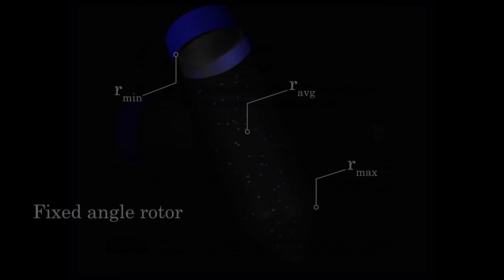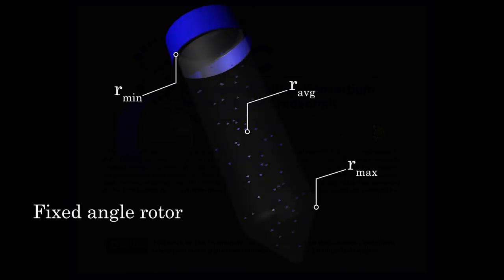But there is a limitation on the speed at which we can spin a swinging bucket rotor without generating too much turbulence and friction. So commonly when higher speeds are required, we will use a fixed angle rotor. These can be spun at a much higher G-force because they are machined to a high tolerance of balance and they are solid, low friction, low resistance rotors.